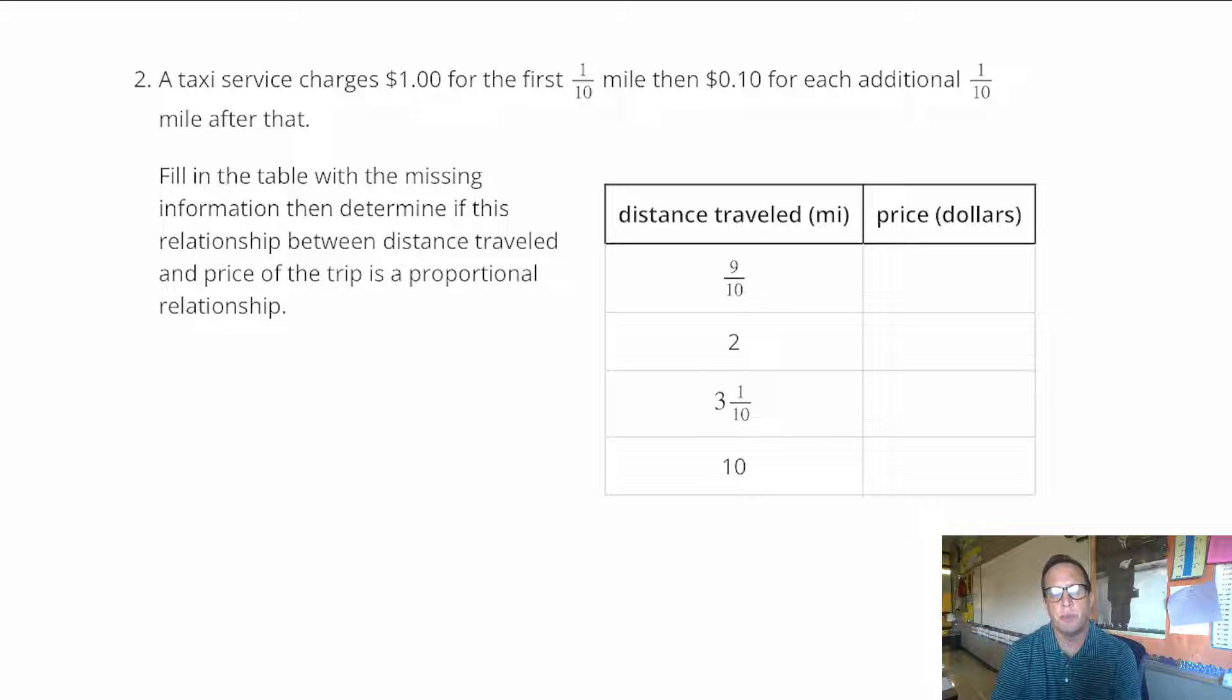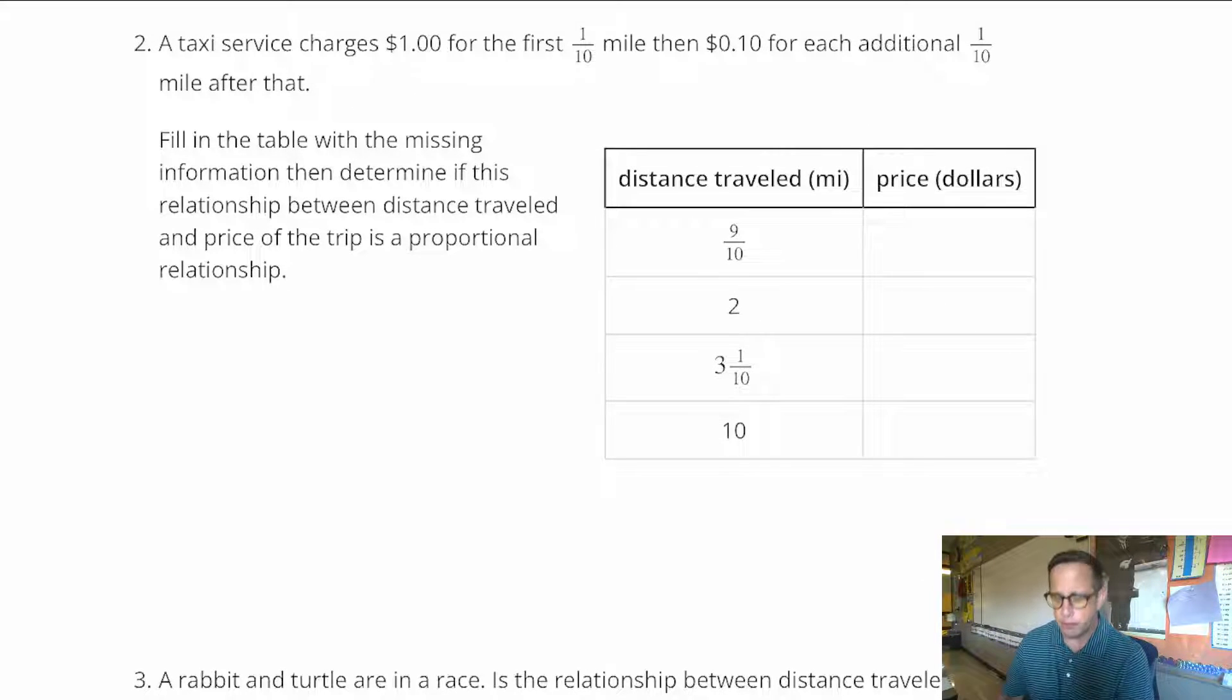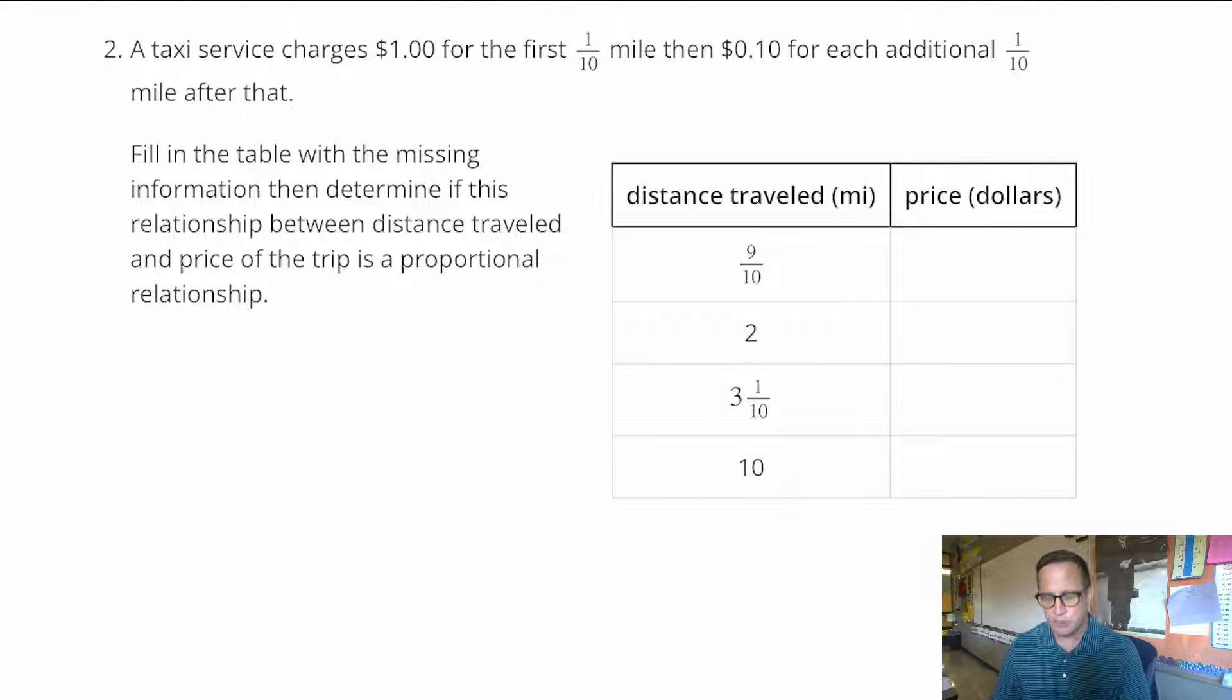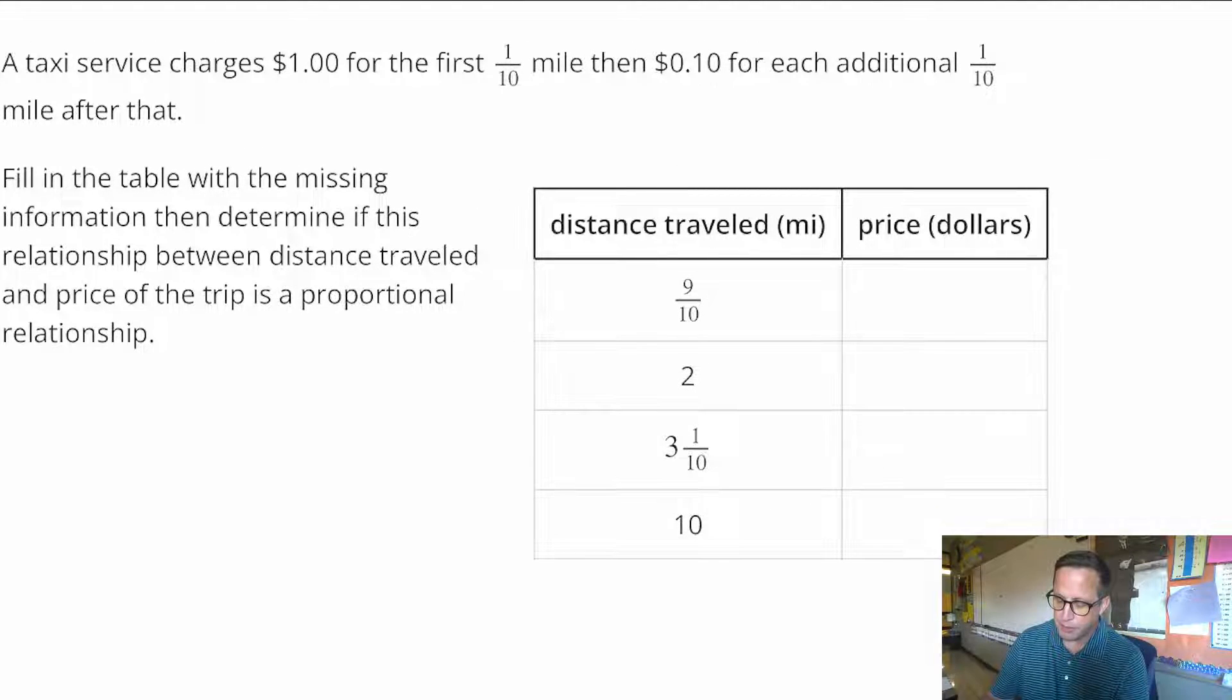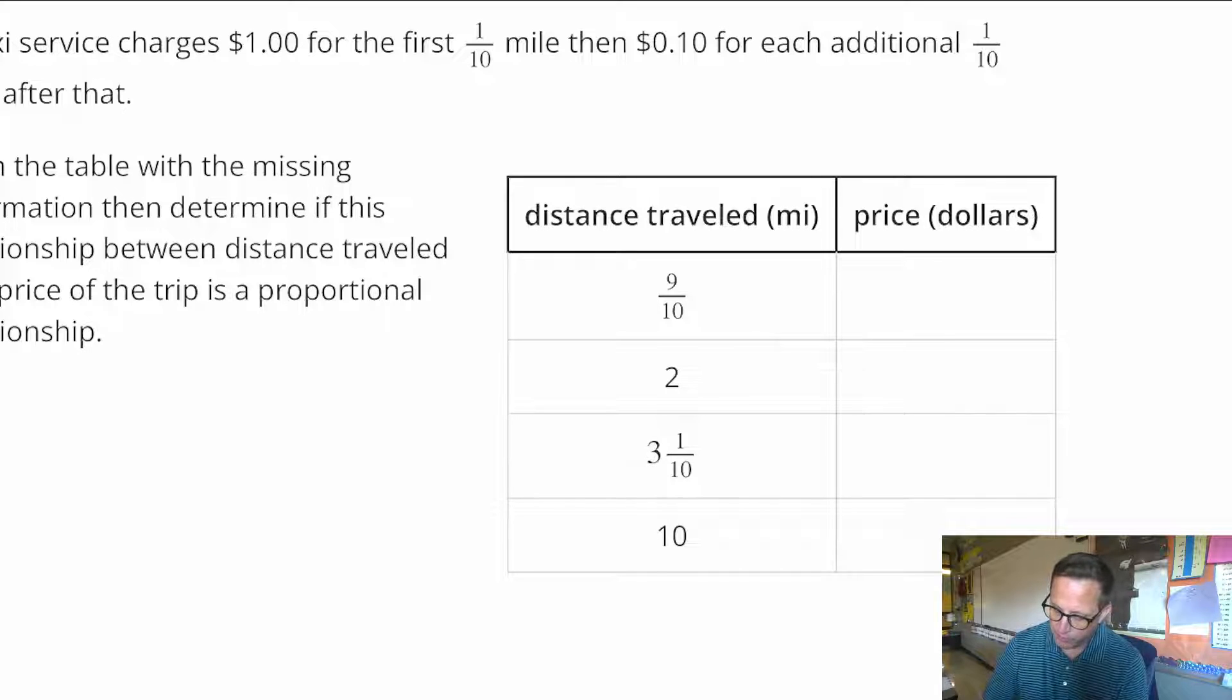For number two, a taxi service charges $1 for the first 1 tenth of a mile, then 10 cents for each additional 1 tenth mile after that. Fill in the table with the missing information, then determine if this relationship between distance traveled and price of the trip is a proportional relationship. So on this one, I think the hard part here is we've dealt with some fractions here. But, so the first tenth of a mile is going to be a dollar. So if I just take away 1 tenth from that, we're left with 8 tenths.